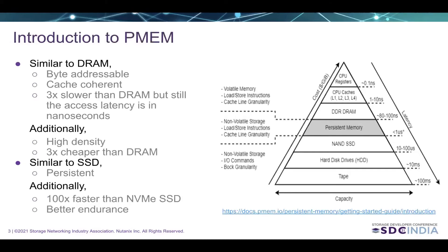Introduction to persistent memory. Persistent memory is a new type of device. In the computer memory hierarchy, it sits between DRAM and SSD. Similar to DRAM, it is byte addressable and cache coherent. It is 3x slower than DRAM, but the access latency is still in nanoseconds. Additionally, it has high density, meaning in a single server node we can have more capacity. It is 3x cheaper than DRAM.